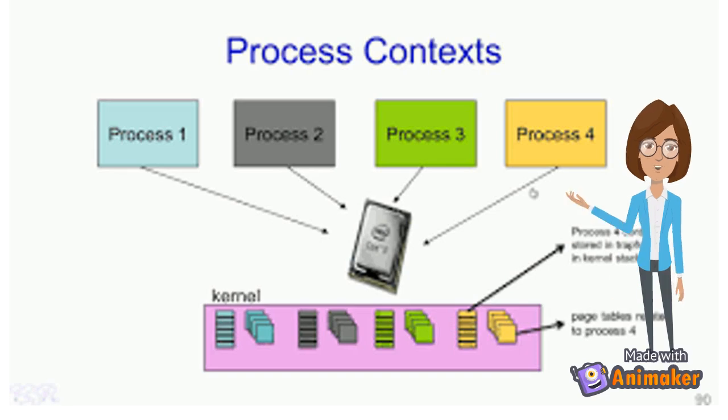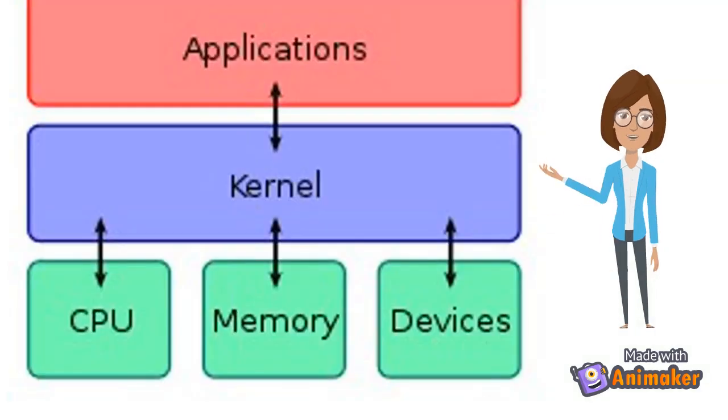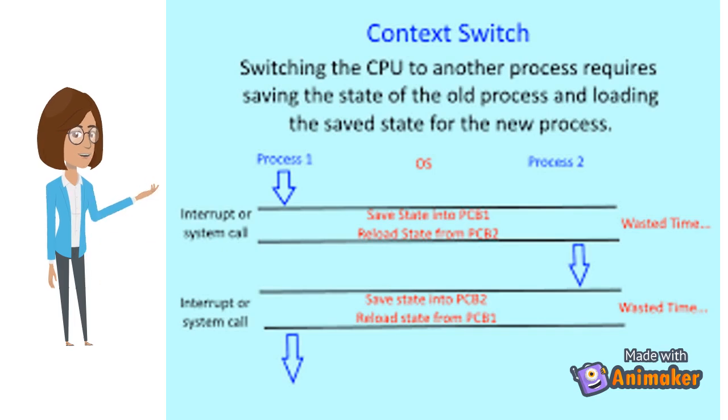A context switching is a process that involves switching of the CPU from one process or task to another. The execution of the process that is present in the running state is suspended by the kernel and another process that is present in the ready state is executed by the CPU. The processes are switched so fast that it gives an illusion to the user that all the processes are being executed at the same time. But the context switching process involved a number of steps that need to be followed and you can directly switch a process from the running state to the ready state.